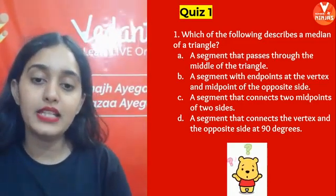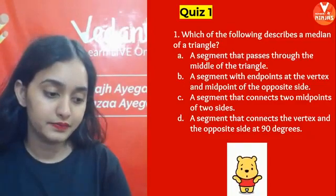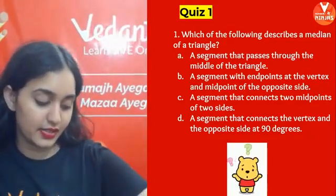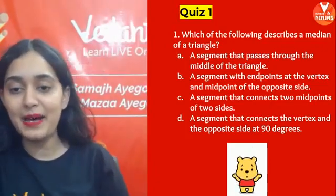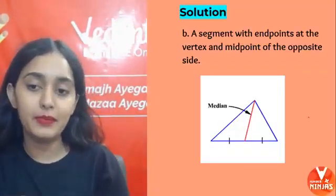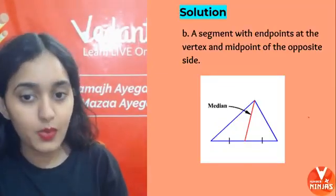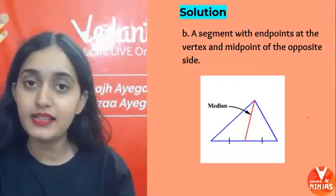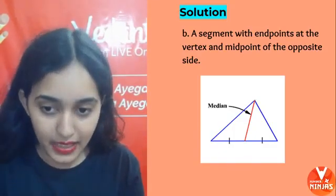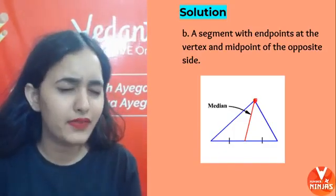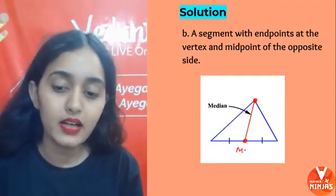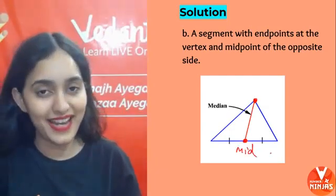Time's up. The median of a triangle is a segment with an endpoint at the vertex and another endpoint at the midpoint of the opposite side — that is option B.